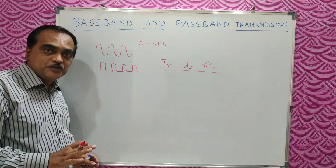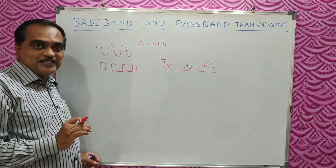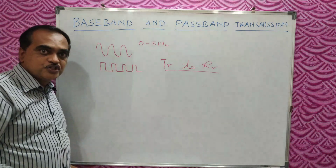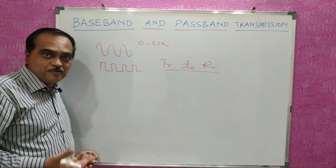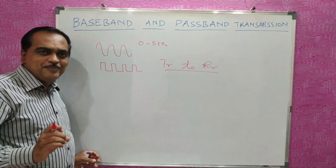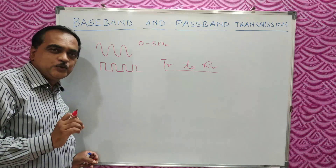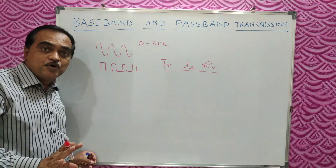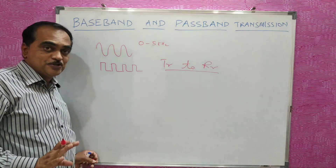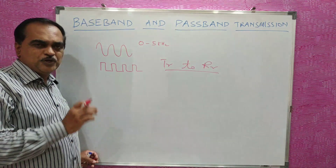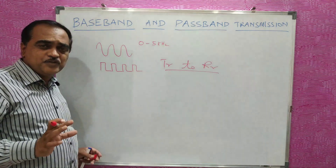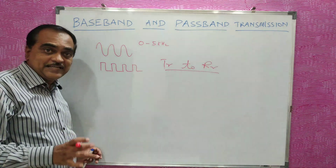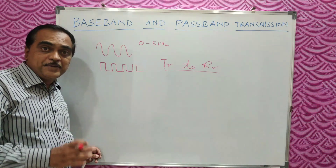Then it is called baseband transmission. Here you are not doing any modulation or demodulation. You are just going to send the basic signal — whether it is analog or digital — only by increasing its power and filtering it to a proper frequency, from transmitter to receiver. The basic information signal going from transmitter to receiver in this way is called baseband transmission.